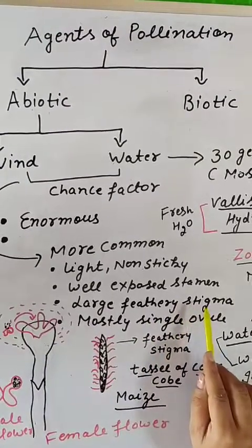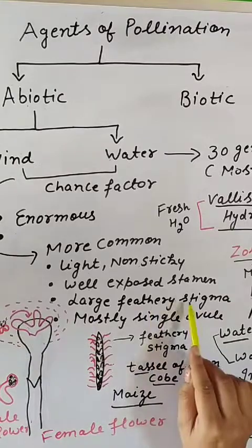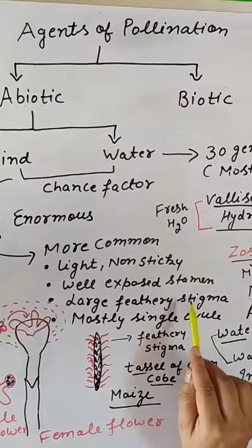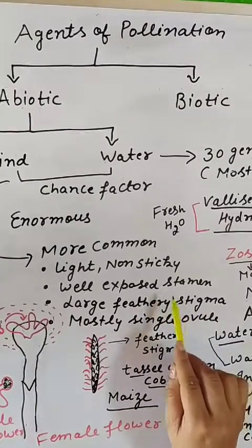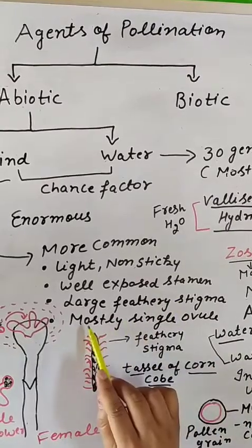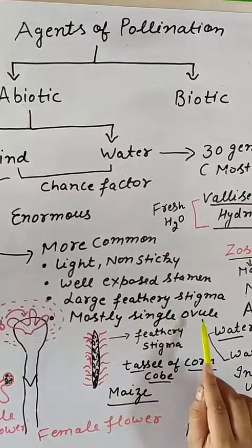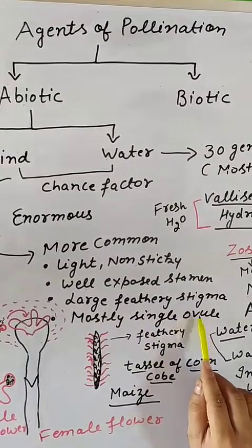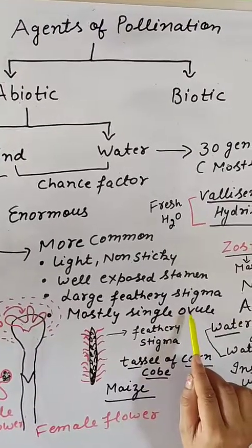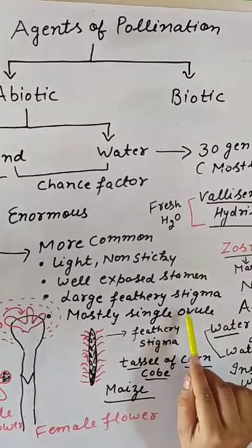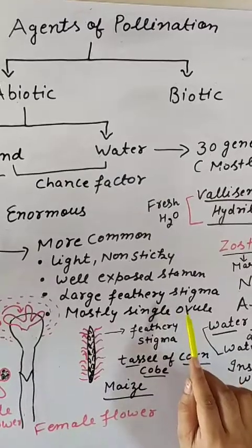Why is there a need for a large feathery stigma? So that the stigma can catch the pollen grains which are in the wind current. They always have a single ovule in their ovary, meaning only one ovule is present because the chance of pollination is less.